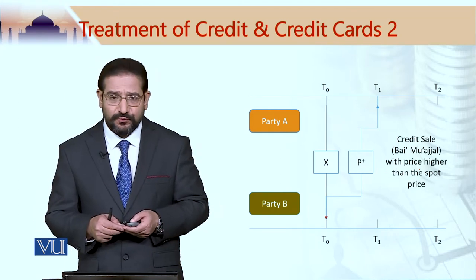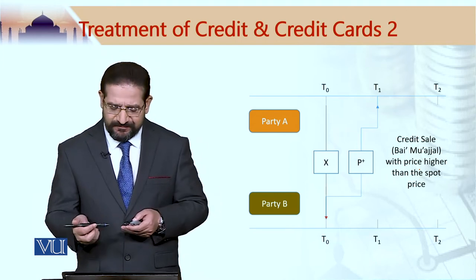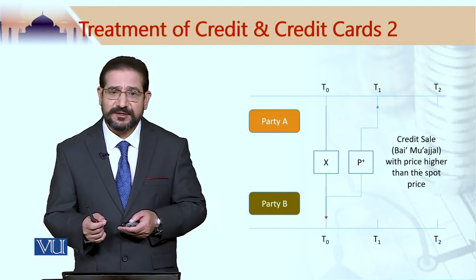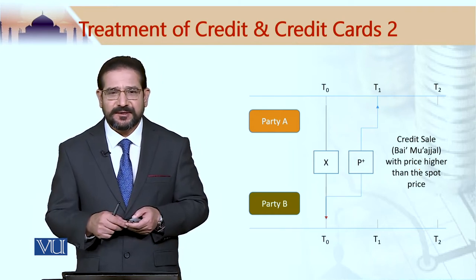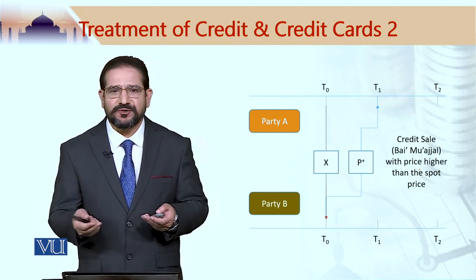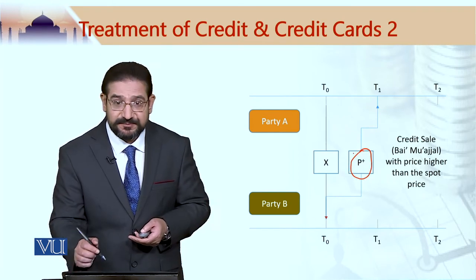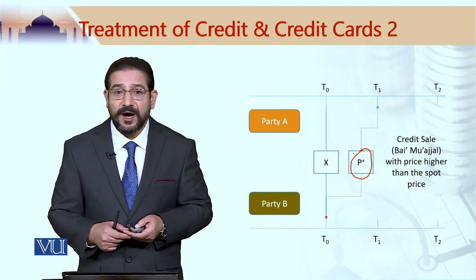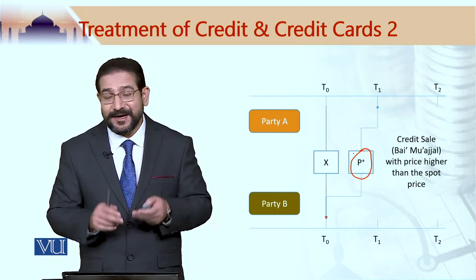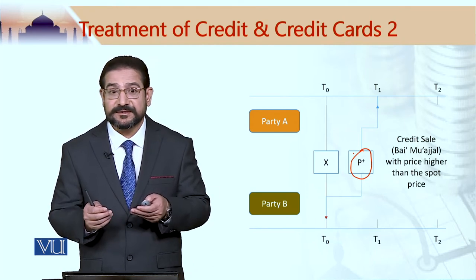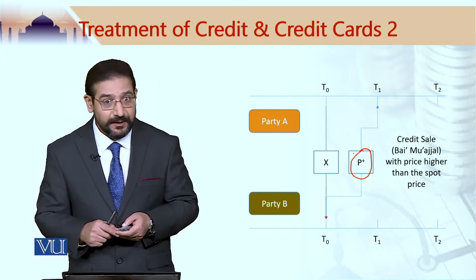Then we look at the credit sale bam uajjal. Bam uajjal is acceptable, and in fact in a credit sale it is quite possible for the seller to charge a higher price — P plus — because the price is going to be paid on a future date. In a credit sale, it is permissible for the seller to charge a higher price than the spot price of the commodity, and this is acceptable.